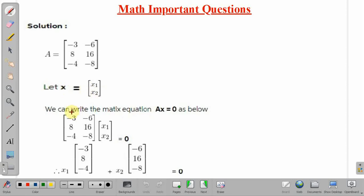Now, we can write the matrix equation as Ax equal to 0 in order to find the solution. This is our matrix A into matrix x, that is x1, x2, and it must be equal to 0. When we multiply, we will get x1 into this first column, minus 3, 8, minus 4, plus x2 into this second column, which is minus 6, 16, and minus 8, and this must be equal to 0.